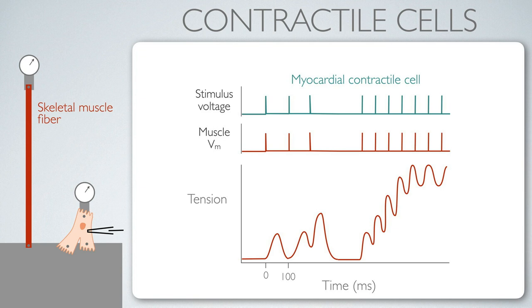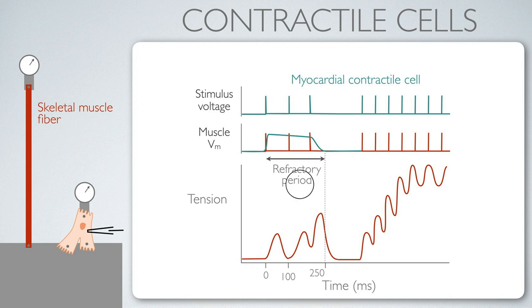The first thing that is different is what the membrane potential looks like. It maintains a depolarization that reflects a refractory period. Note the timescale: that's a quarter of a second or 250 milliseconds. For that duration of the refractory period, the tension is generated over that timescale. That's the twitch for a myocardial contractile cell — note that it's longer in duration than the skeletal muscle fiber. We're spanning almost three skeletal muscle twitches within that single duration.